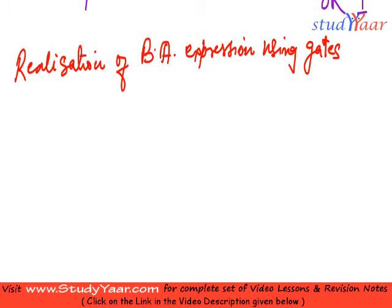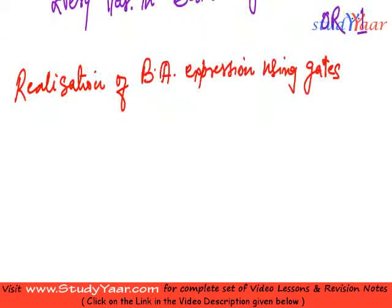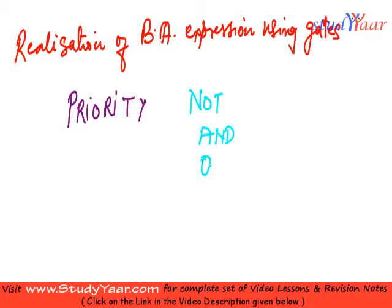Here we follow some steps to do it. What we do is first we determine the priority. Let me just show you the priority. The priority is NOT has the highest priority. Let's do it like this: NOT, then AND, then OR. The priority is increasing like this.